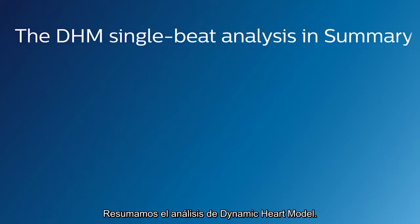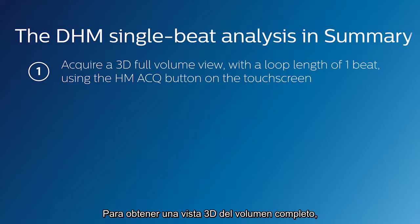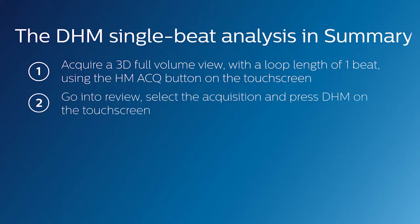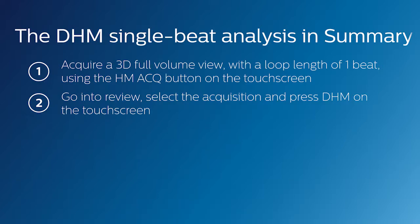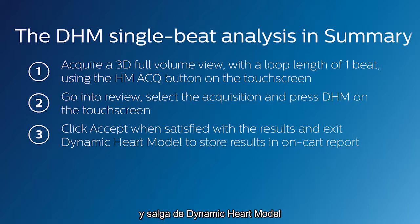Summarizing the Dynamic Heart Model analysis: acquire a 3D full volume view using the HM-ACQ button on the touch screen. Go into Review, select the acquisition and press DHM on the touch screen. Click Accept when satisfied with the results and exit the Dynamic Heart Model to store the results in an on-card report.